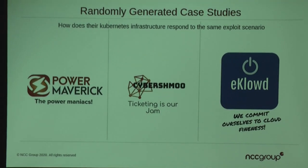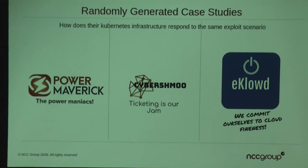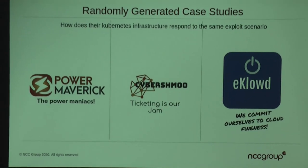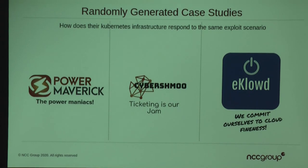I've created three completely random businesses, and we'll talk through their threat models and how each one is able to respond to or defend from the same attack: they're running a service on port 5000, the service is exploitable, and an attacker can take over a pod.